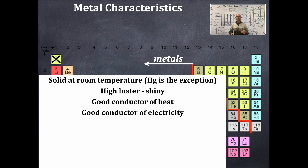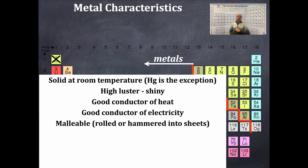Metals are also good conductors of electricity. The wires in the walls of your home are most likely copper, or bundles of aluminum. By the way, the best conductor of electricity is actually silver, but it tarnishes easily. Metals are also malleable — they can be rolled or hammered into sheets. Think about aluminum foil, which you use to wrap a turkey or leftovers. It's not tin foil — don't make that mistake.